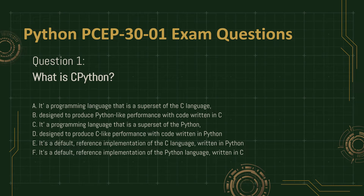D. Designed to produce C-like performance with code written in Python. E. It's a default reference implementation of the C language, written in Python. F. It's a default reference implementation of the Python language, written in C.